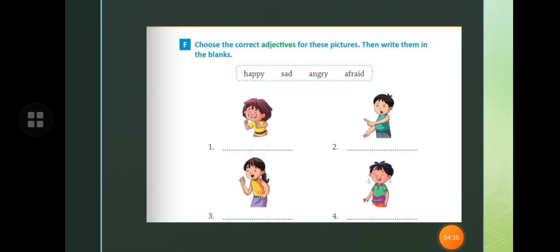Children. Next exercise is choose the correct adjectives for these pictures. Then write them in the blank. You will see the picture - who is happy, who is sad, who is angry, and who is afraid. Write down here.